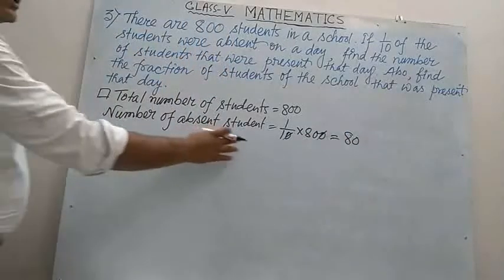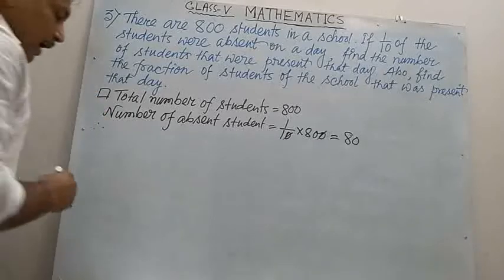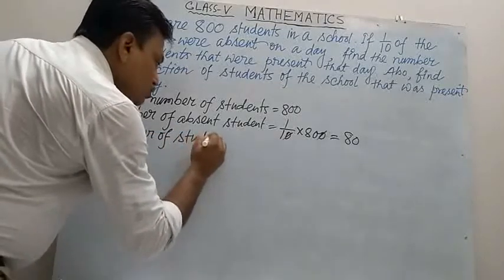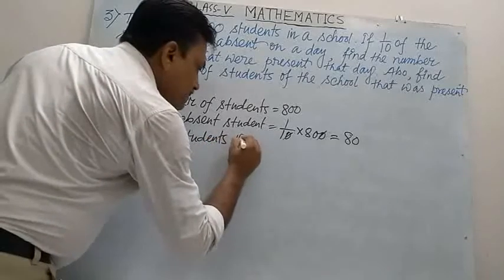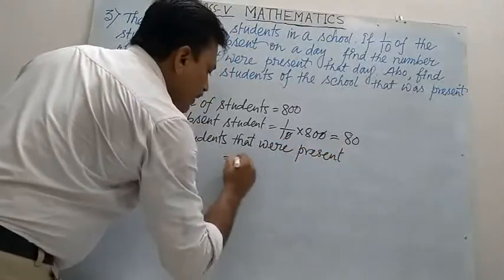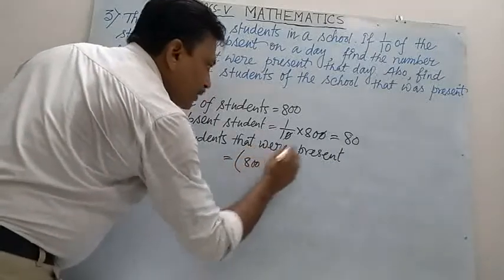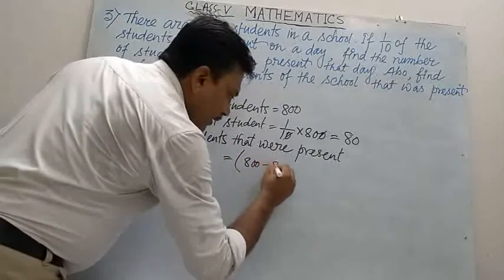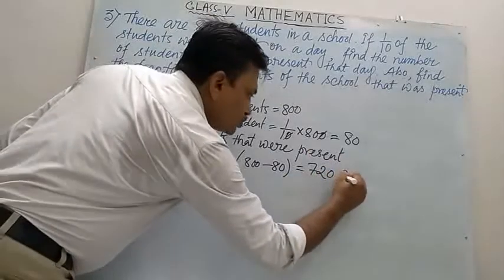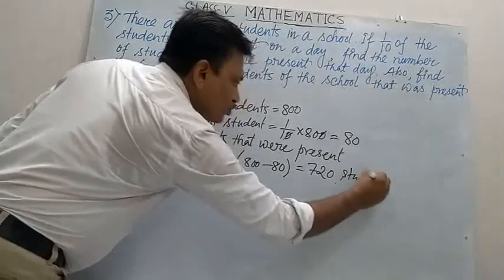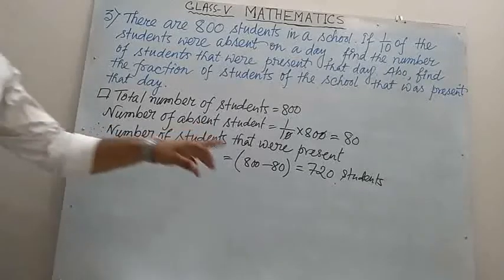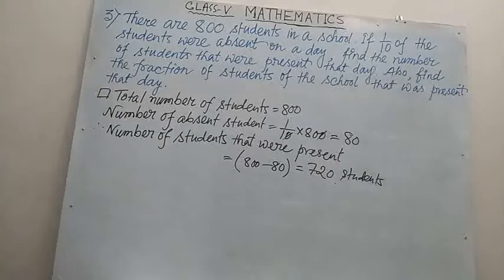So number of absent students is 80. Therefore, number of students that were present: total is 800 and absent is 80. So 800 minus 80 equals 720 students. Number of students that were present on that day: 720 students. First part is over.